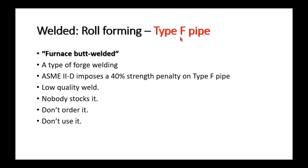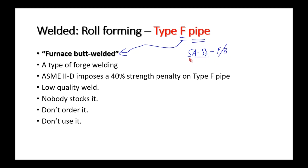Type F pipe — the F stands for furnace butt welded. For example, SA-53 Grade F/B: A53 is the ASTM designation, S is for ASME, B is the grade of material, and F stands for Type F pipe, which is furnace butt welded. This is essentially forge welding — what a blacksmith did with a hammer and forge — and it makes a weak weld.